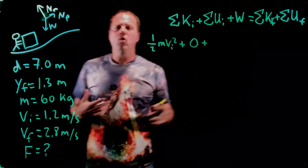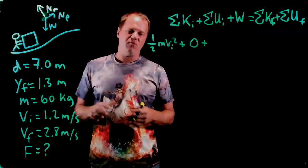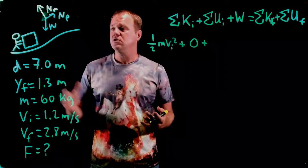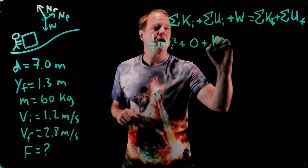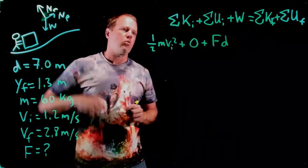And then work. Work is force times distance times cosine of the angle between the force and the motion. That simplifies to force times distance when the force and the motion are in the same direction. So I'm going to just write F times D. Okay, the F in question is this normal force from the person. I'm just using the generic F.